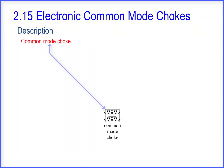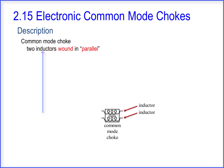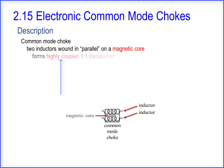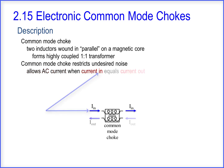A common mode choke is comprised of two inductors. The two inductors are wound in parallel on a magnetic core, forming a highly coupled one-to-one transformer. Common mode chokes restrict undesired noise; however, they do allow AC current when the current in equals current out.